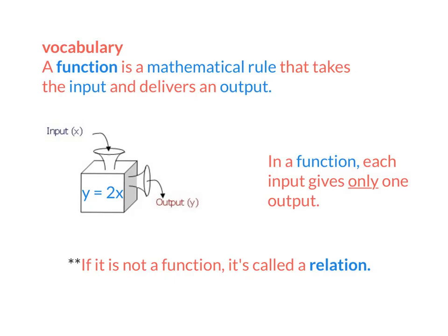A function is a mathematical rule that takes the input and delivers an output. You can think of it like a vending machine. What goes in is the input. What comes out is the output. In a function, each input gives only one output. If it is not a function, it is called a relation.